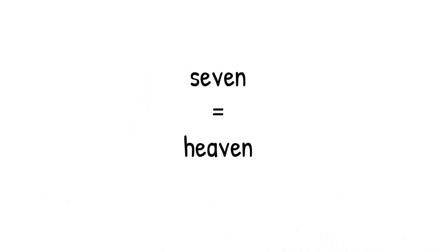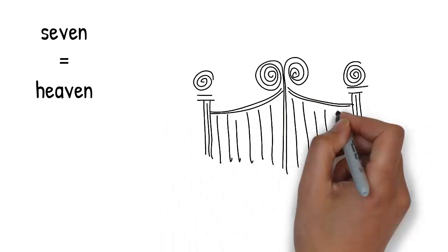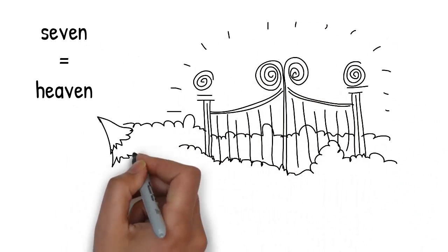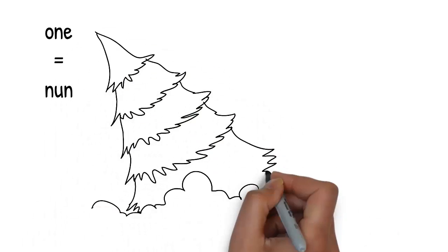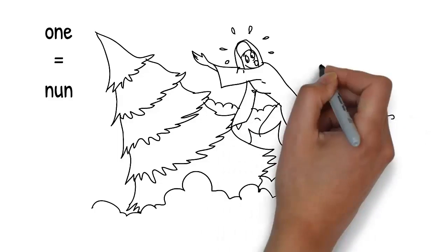The pine grows up and up into the sky, so high it breaks through the clouds to heaven. Heaven rhymes with 7. A nun walks through the pearly gates of heaven and accidentally bumps into the pine. Nun rhymes with 1.